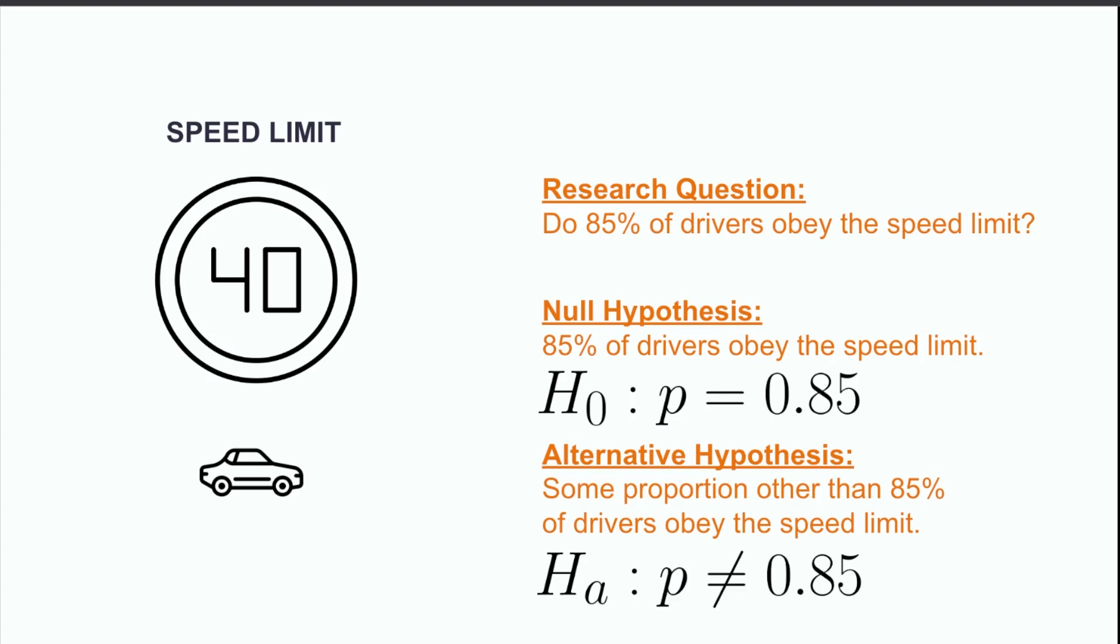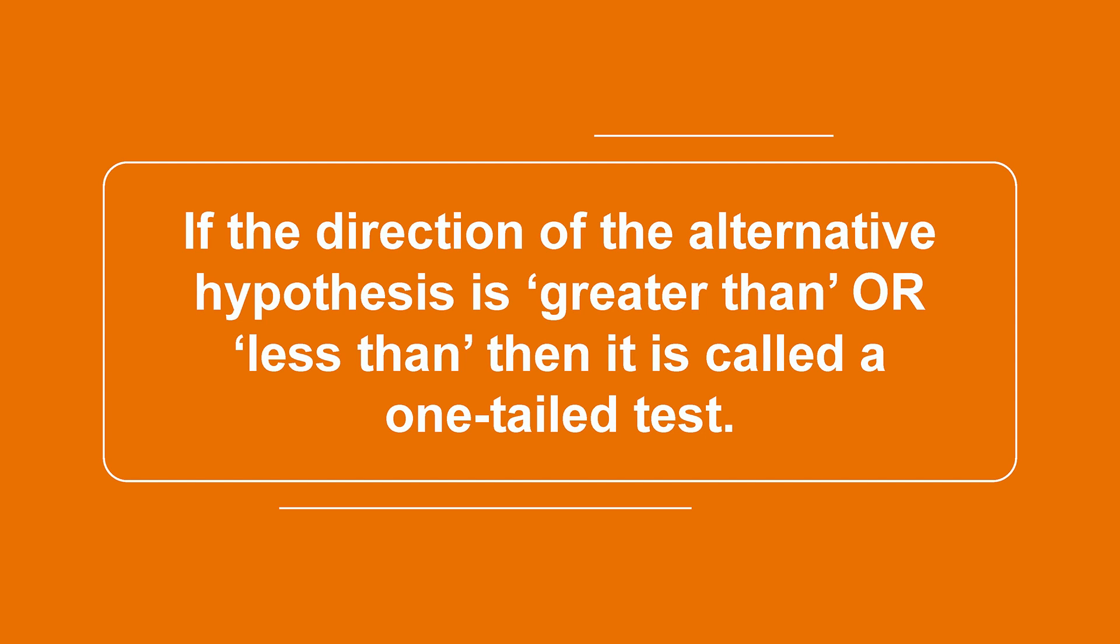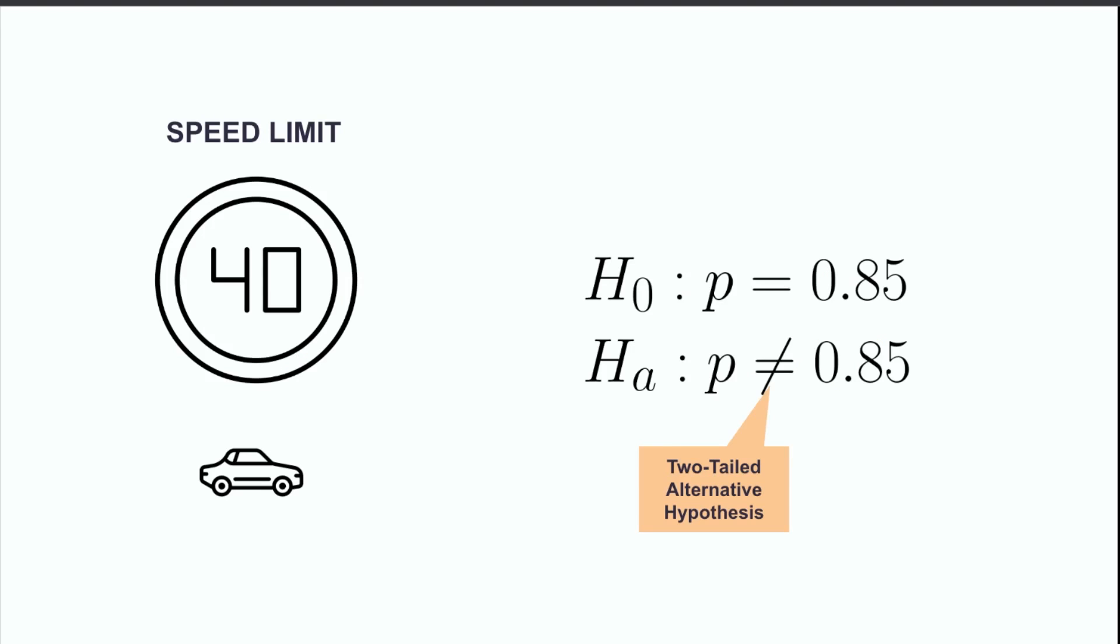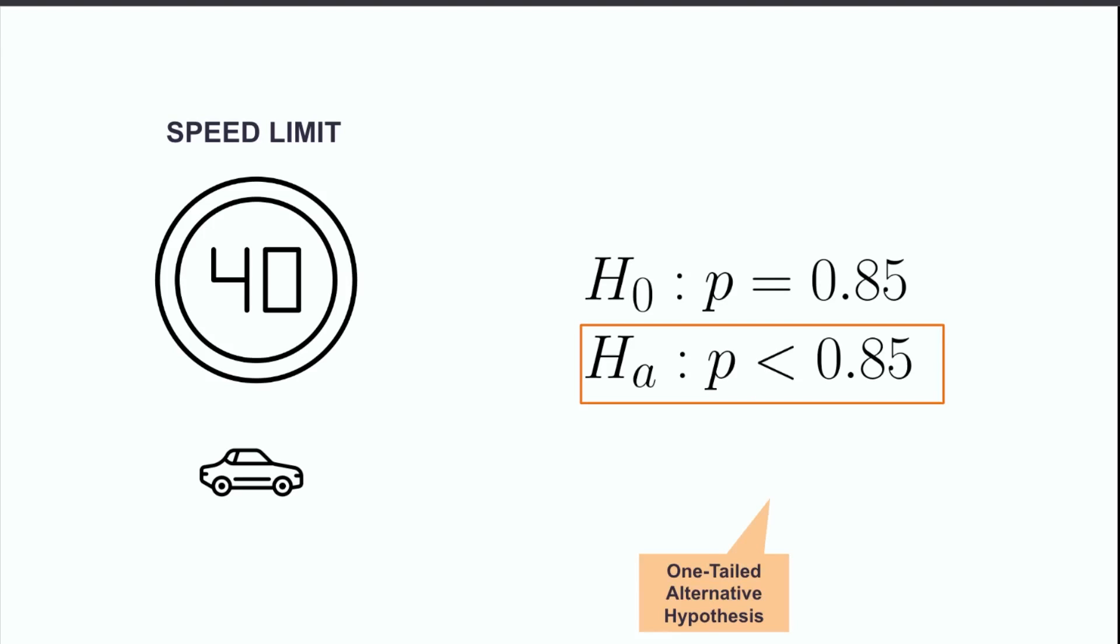Because we have a not equals here, this is referred to as a two-tailed test. We just want to know that the null is wrong in any direction, not necessarily that the true proportion is greater than or less than the null. In general, if the direction of an alternative hypothesis is not equal to, then we are performing a two-tailed test. If the direction of an alternative hypothesis is greater than or less than, then we are performing a one-tailed test. We are performing a two-tailed test in our speed limit example, but if we were to change the alternative to P less than 0.85 or P greater than 0.85, that would be a one-tailed test.